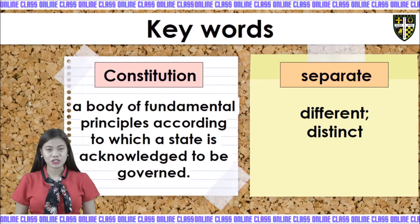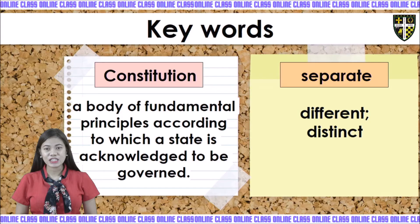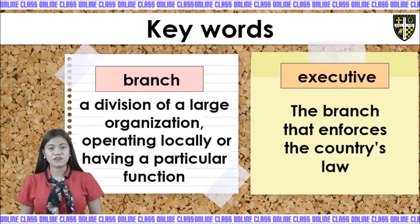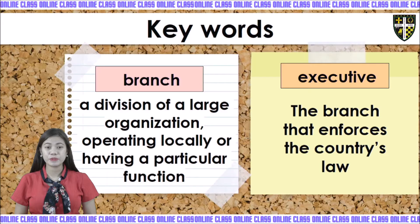What does constitution mean? It is a body of fundamental principles according to which a state is acknowledged to be governed. Next we have separate. Separate means different, distinct. Next we have branch. Branch is a division of a large organization operating locally or having a particular function.